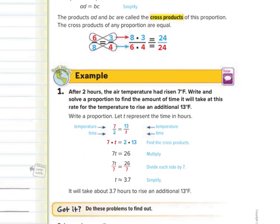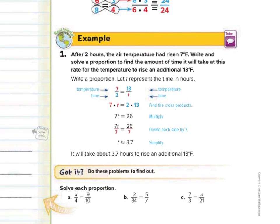In our guided example, after two hours the air temperature had risen seven degrees Fahrenheit. Write and solve a proportion to find the amount of time it will take, at this rate, for the temperature to rise an additional 13 degrees Fahrenheit. They let T represent the unknown time in hours, and notice we have temperature over time equals temperature over time. So it rose seven degrees in two hours, and we want to find out how many hours for 13 degrees.